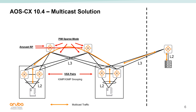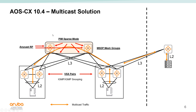A new feature with 10.4 is Anycast RP. Much like Active Gateway on VSX switches, we're able to use an Anycast IP using a loopback address — the same Anycast IP on all rendezvous points — and all leafs or attached devices would be configured to point to that Anycast rendezvous point address. We marry that solution with MSDP mesh groups, which allows us to group the spine routers into an MSDP mesh so they share MSDP source address information with each other, as well as with another PIM domain. MSDP mesh groups ensures both spine RPs in this Anycast environment have the same source address information.